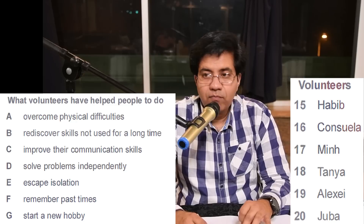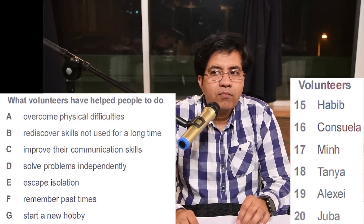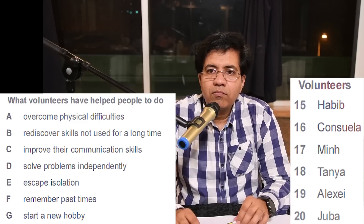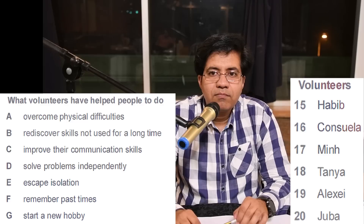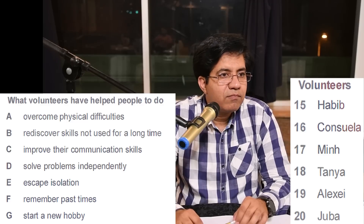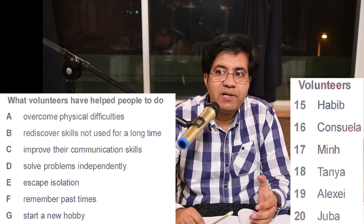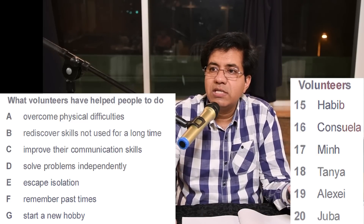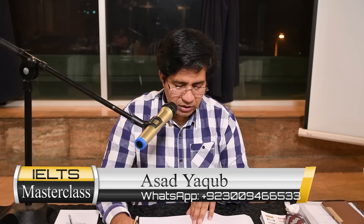Juba volunteers with a teenage girl with learning difficulties who wasn't very good at talking to other people. Juba worked very patiently with her and now the girl is far better at expressing herself and understanding other people. 'Talking difficulties,' 'expressing herself,' 'understanding other people' — that is C: improve their communication skills, for question 20. This is how they reword or redefine — you've got to find it.